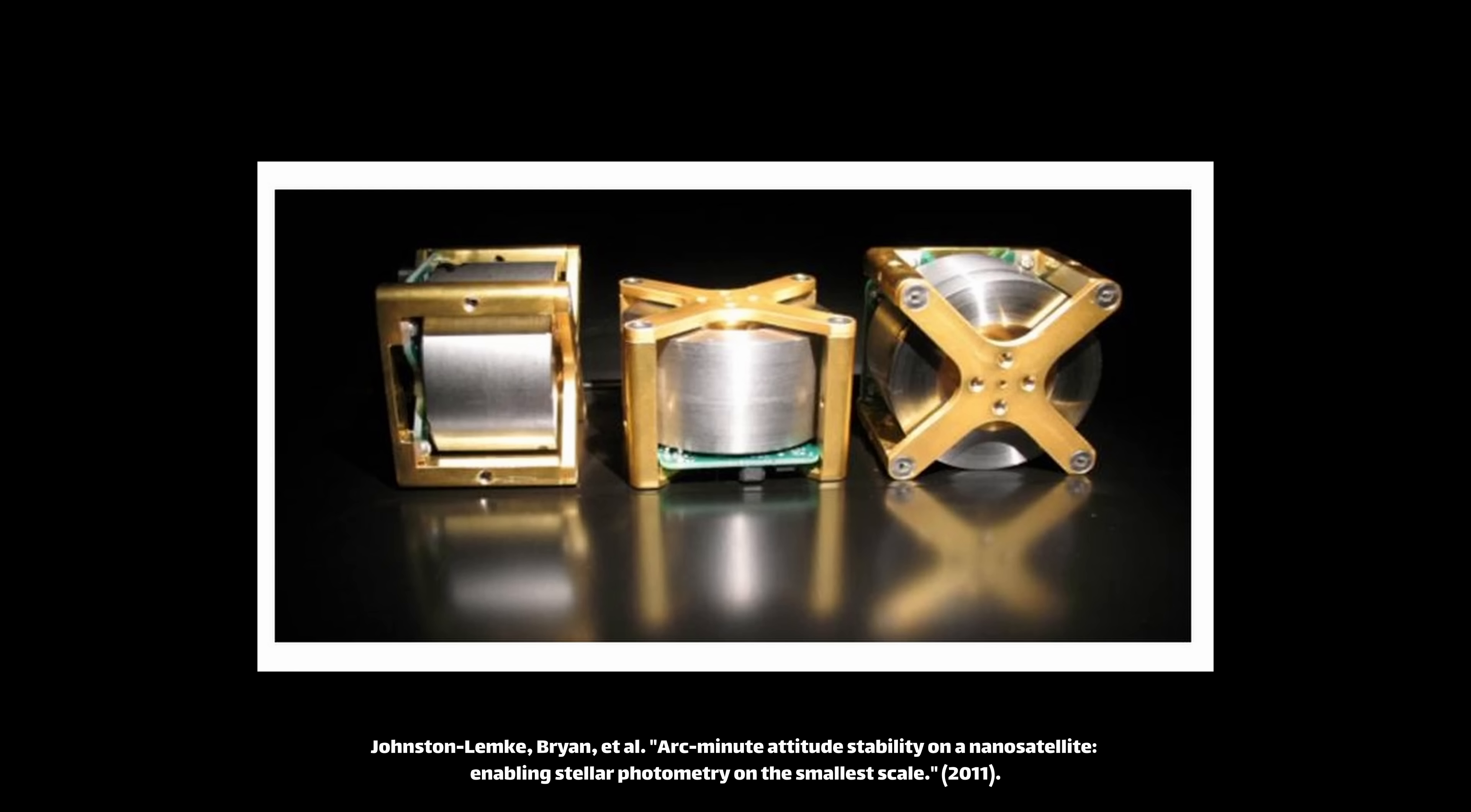This is done through the conservation of angular momentum. As the flywheel spins up in one direction, the spacecraft rotates in the opposite direction. If you have three of these in three different axes, X, Y, and Z,